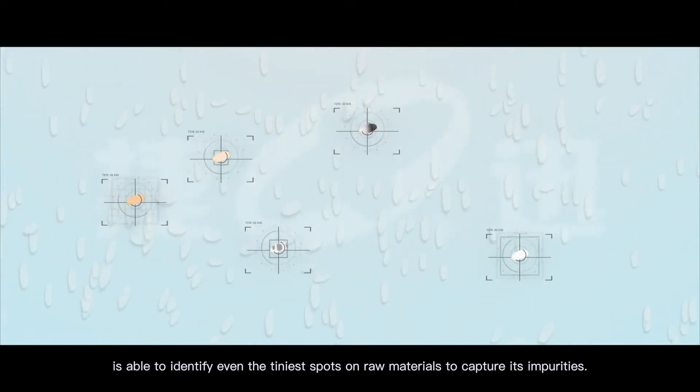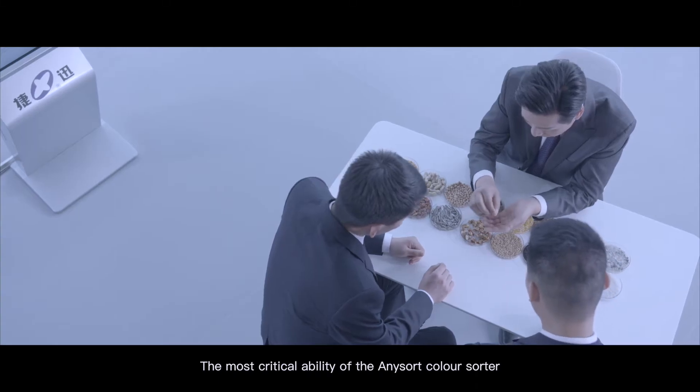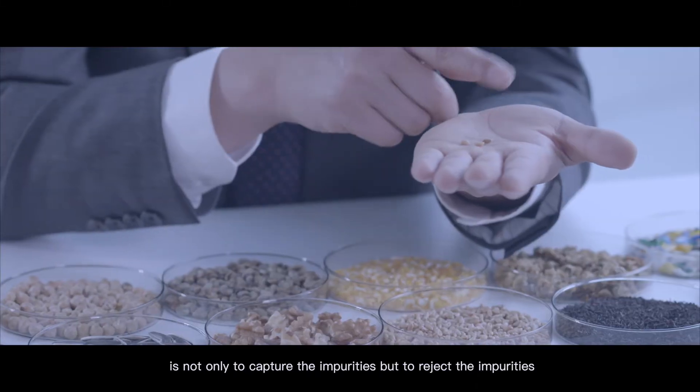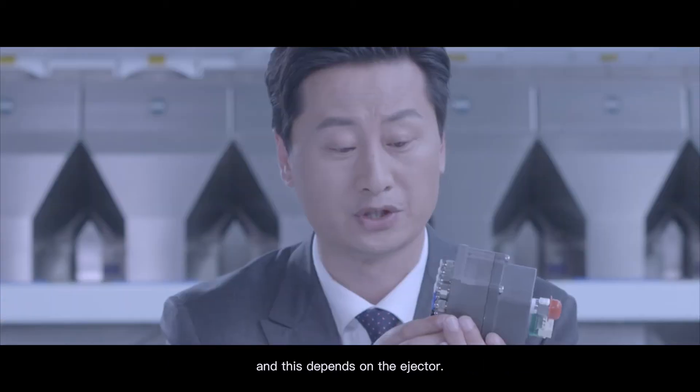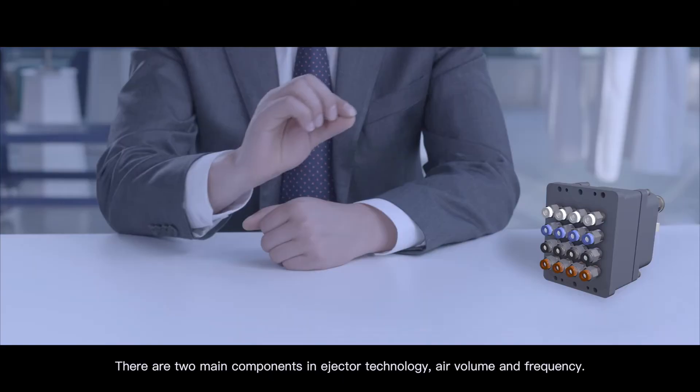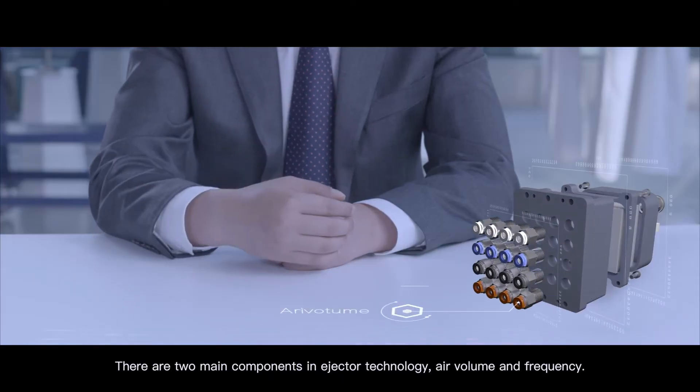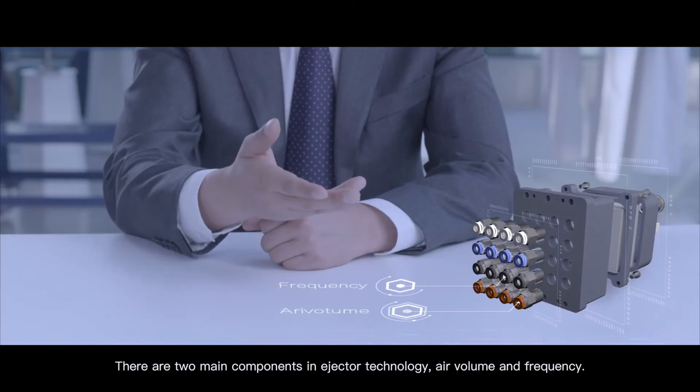The most critical ability of the Anysort color sorter is not only to capture the impurities but to reject them, and this depends on the ejector. There are two main components in ejector technology: air volume and frequency.